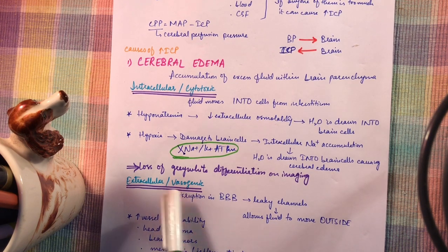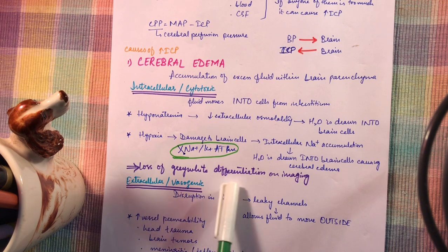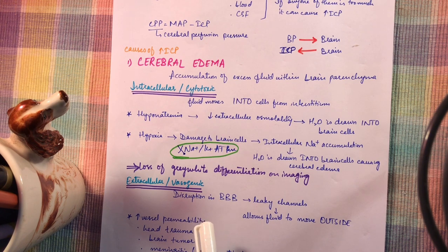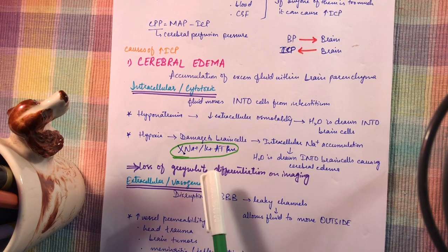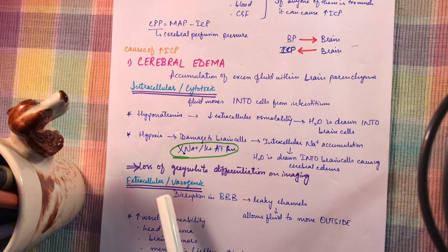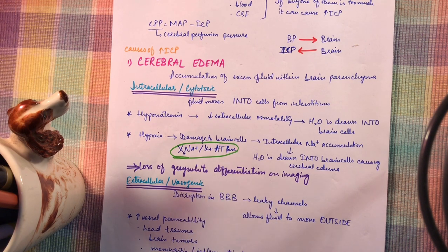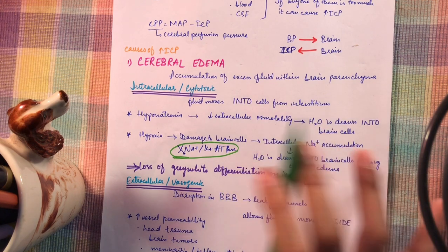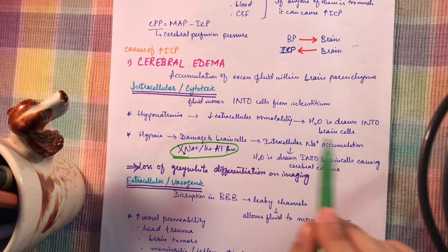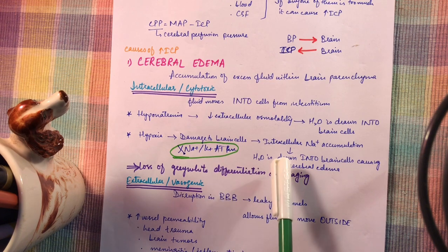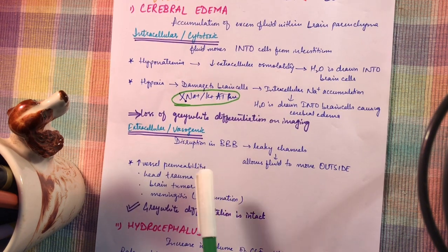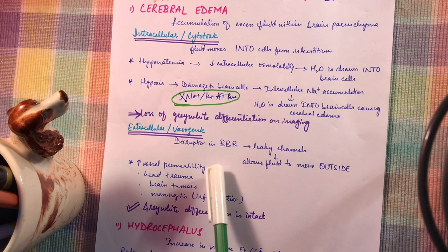One important thing: on imaging you can see a loss of gray-white differentiation. White matter is present deep in the brain; it is less dense due to myelin content and appears dark. Gray matter is composed of cell bodies, is denser, and appears lighter. There is normally a clear-cut differentiation between white matter and gray matter in the periphery. Loss of this differentiation on imaging is seen in intracellular edema.